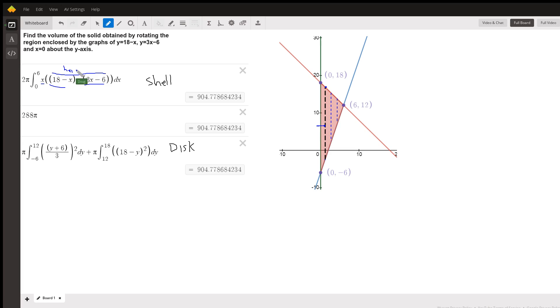And, of course, dx represents the width of the shell. So there's the shell method. You get this 904.77, and this proves that you can get an exact value, 288 pi. If you want to use the disk method, then a typical disk would change.